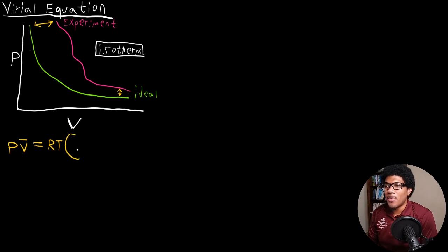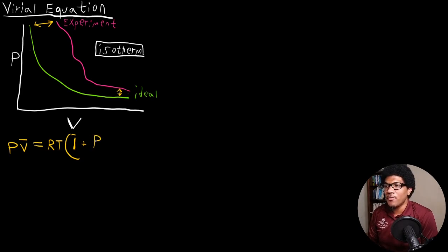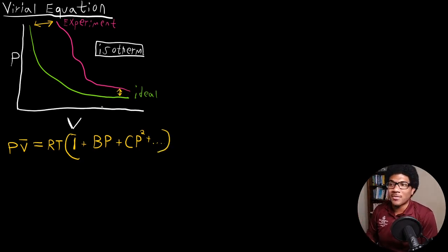And then we would do a power series expansion. So that first term would be the ideal gas law, so we'll just put one there. Then the next term would be a linear term with respect to pressure with a coefficient in front of it that we'll call B, times pressure. Then there'll be a quadratic term with a coefficient called C, plus dot dot dot, continuing on however long you want. These coefficients B and C are called virial coefficients.